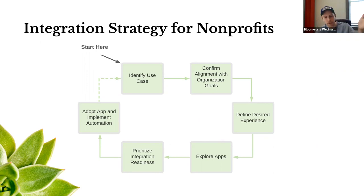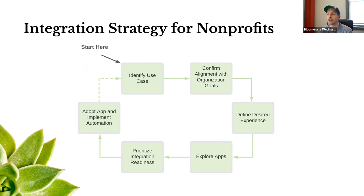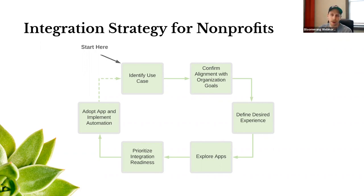It's so important to first identify what you're trying to accomplish, confirm alignment with your organizational goals, and then define a desired experience. What are you trying to accomplish with this automation? Are you trying to save time on manual entry, or also do some communication like sending receipts or video thank yous? Look at the entire experience of what you're trying to accomplish with your fundraising goals. Then prioritize integration readiness, and once you're ready, adopt that app and implement that automation. Don't rush into getting integrations set up without first going through these use cases.